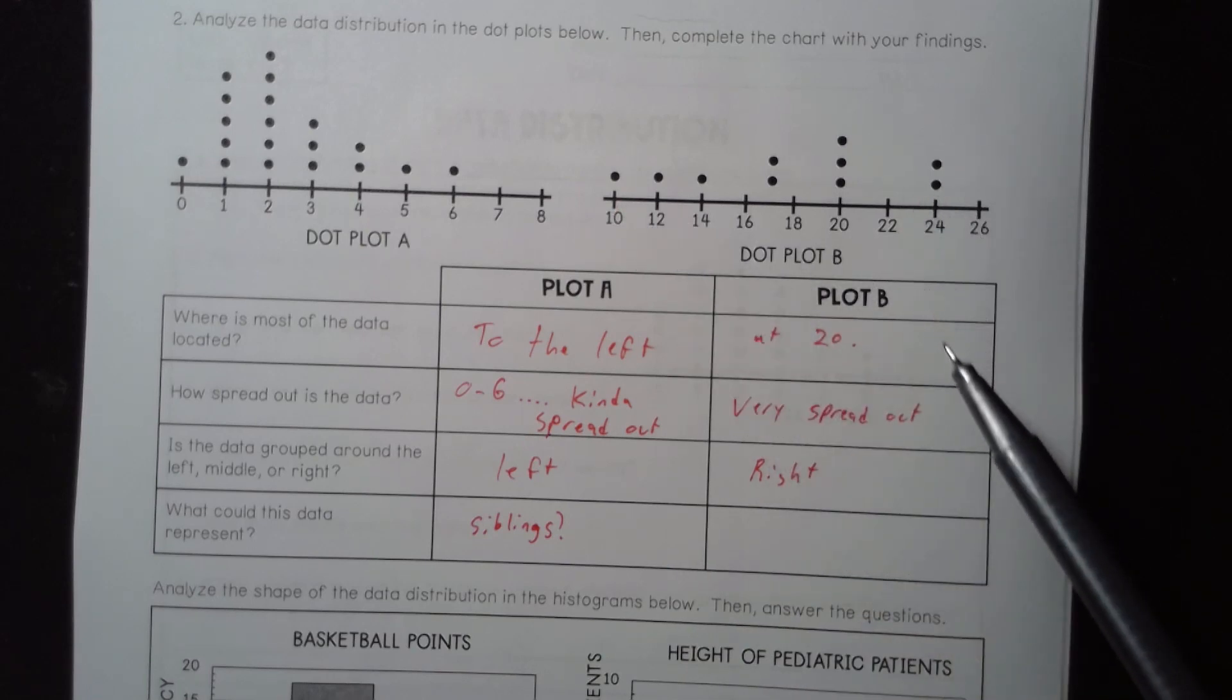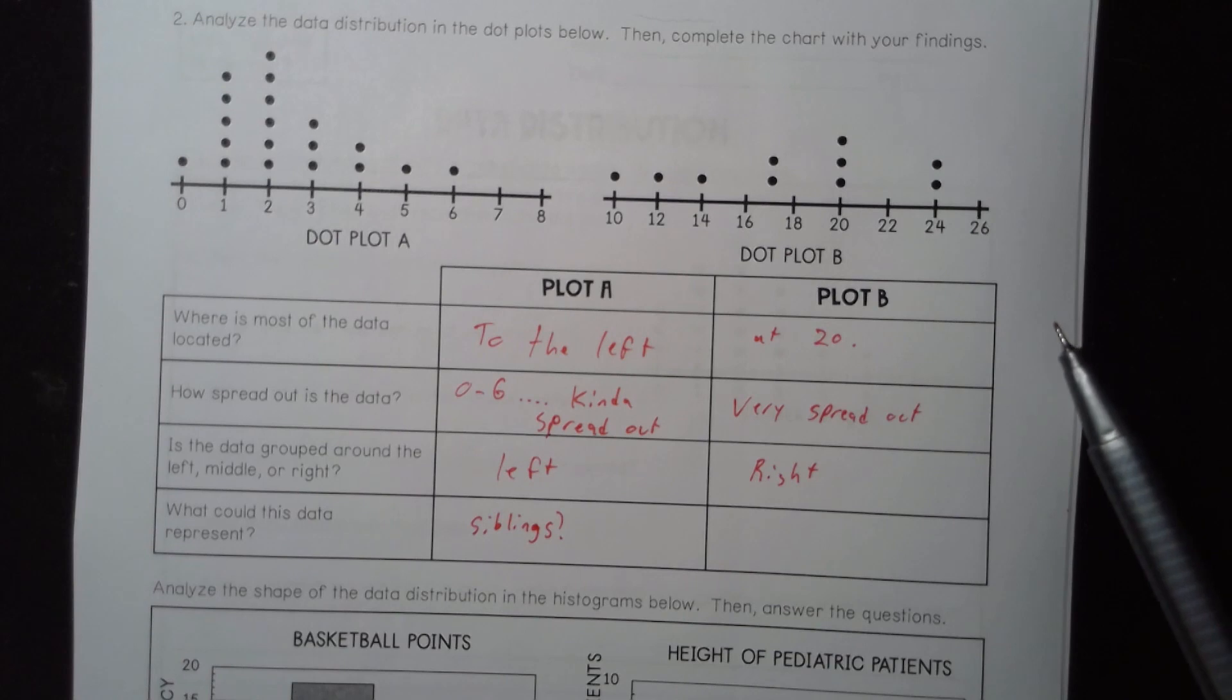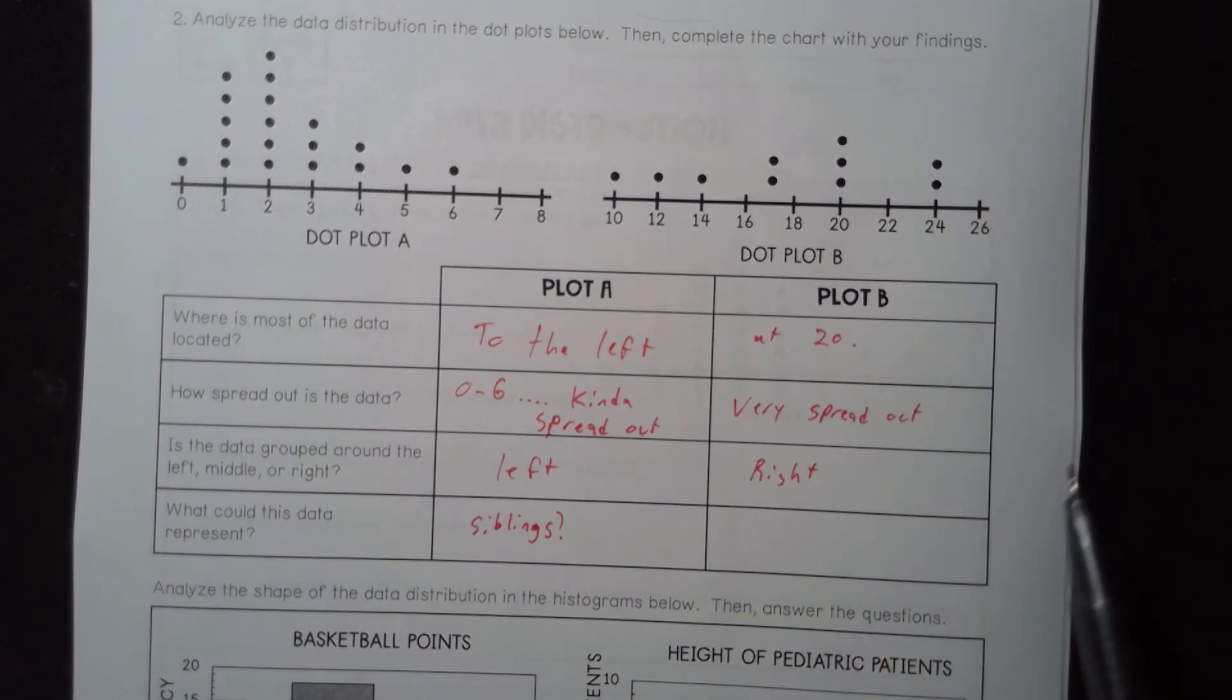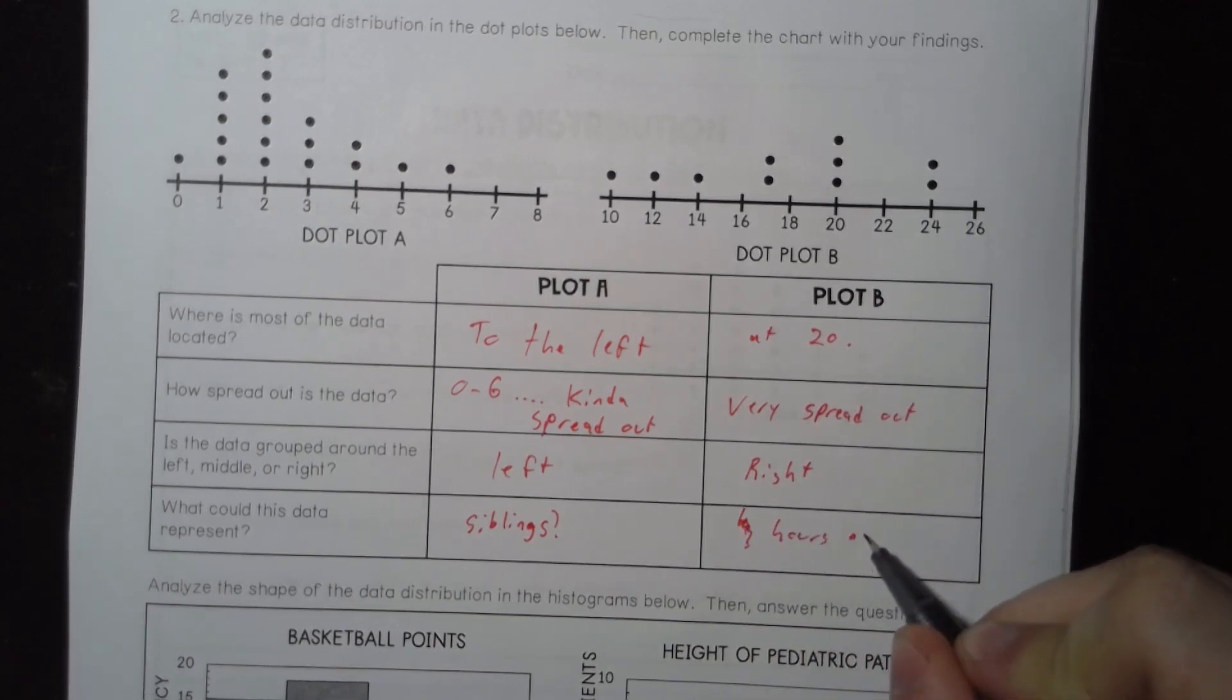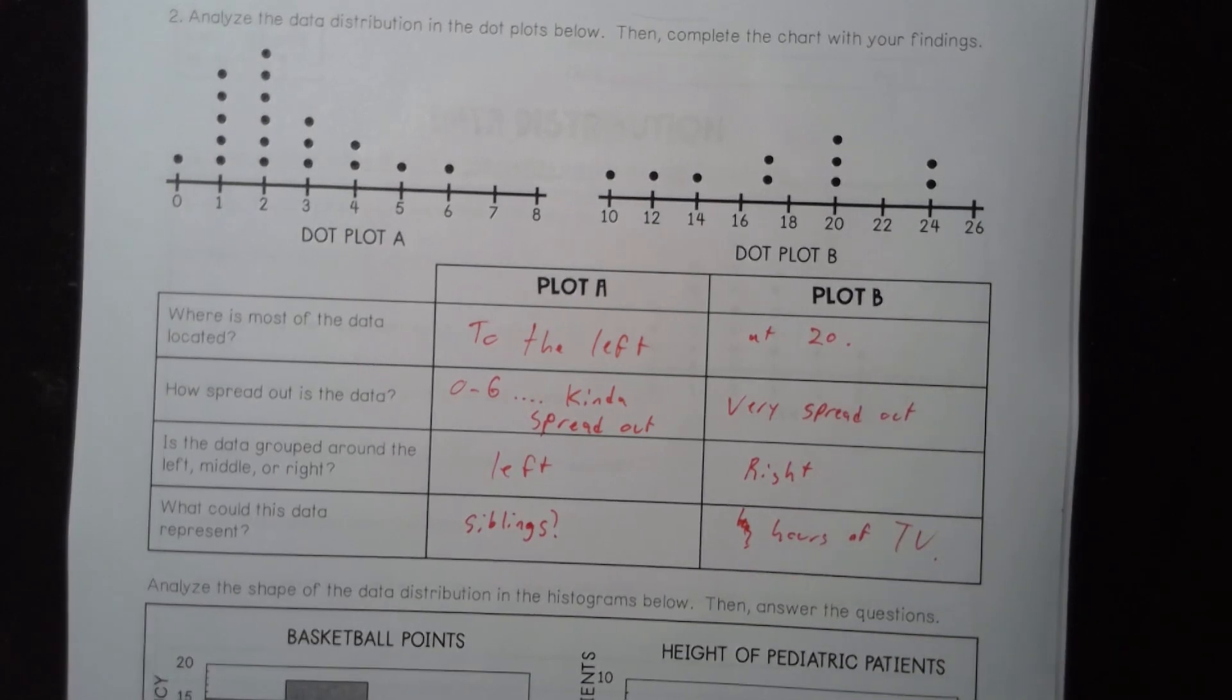And what could this data represent? Well, this one goes from 10 to 24, and 20 was the most often. So, this one could be perhaps how many hours do you spend watching TV when we're not in quarantine. This could be, I don't know, how many times do you, how many cups of water do you drink? This could be how many Skittles do you eat in a week? I don't know. It could be how many minutes did it take you to eat an entire bag of jelly beans? I have no idea what this could be. So, this one, I don't know, will say hours of TV. Because that seems like a reasonable amount, but maybe.